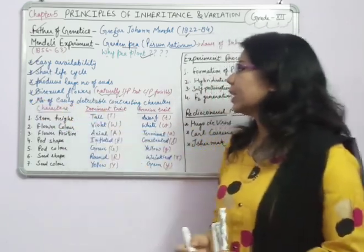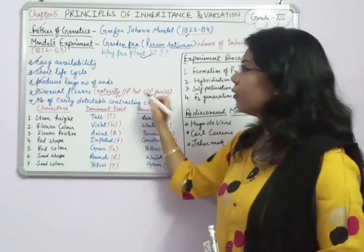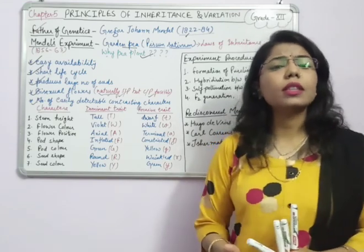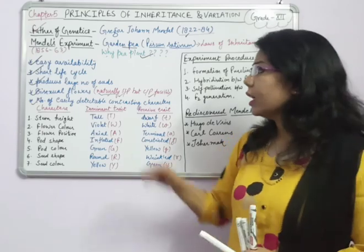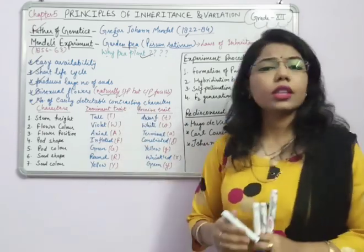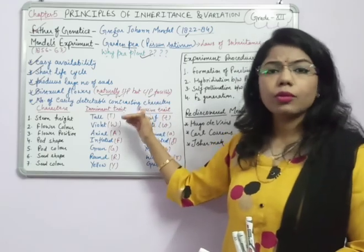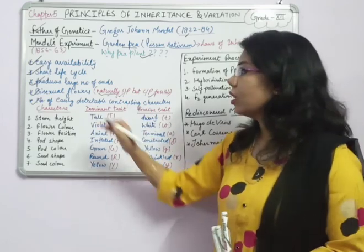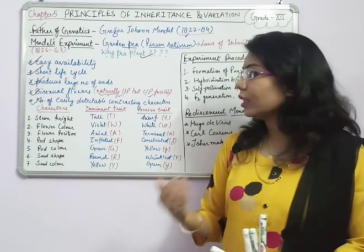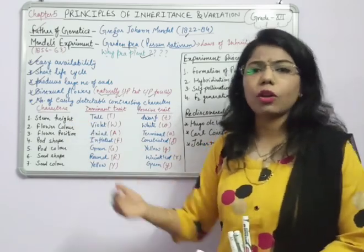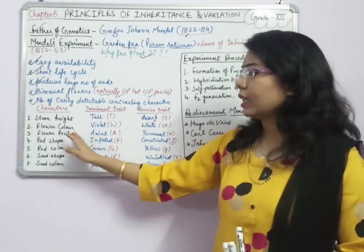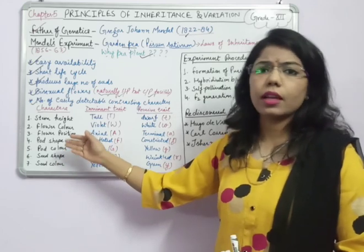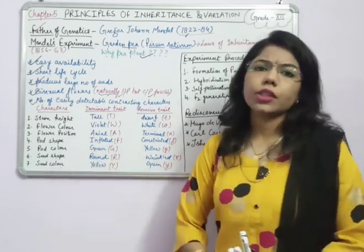Another important advantage is the number of easily detectable contrasting characters. Mendel studied seven characters: plant height, flower color, flower position, pod shape, pod color, seed shape, and seed color. Each character has two contrasting traits — for example, tall vs. dwarf for plant height.